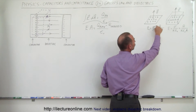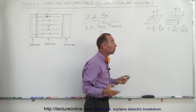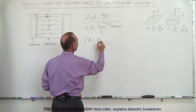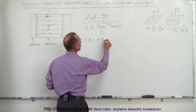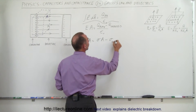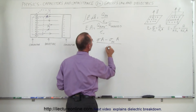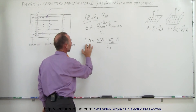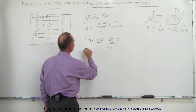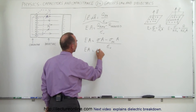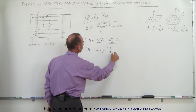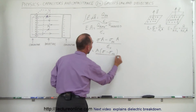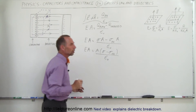The charge is basically equal to the charge density times the area. So E times A equals the charge density on the plate times the area, minus the charge density of the induced charges times the area, all divided by epsilon sub-naught. The areas cancel, giving us E times A equals A times (sigma minus sigma-induced) divided by epsilon sub-naught. Here sigma is the charge density on the capacitor plates and sigma-induced is the charge density of the induced charges.